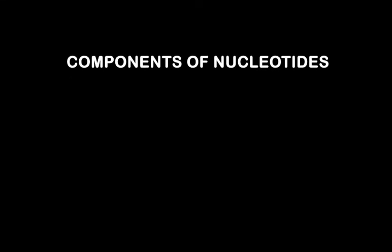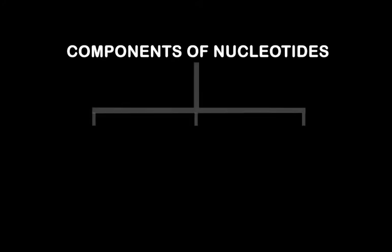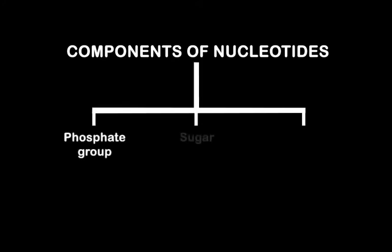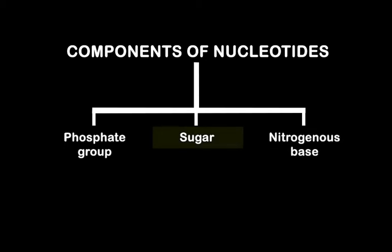Today we are going to discuss the components of nucleotide. Now we have seen that a nucleotide has three major components: the phosphate group, the sugar, and the nitrogen base. So first let us start with the sugar.